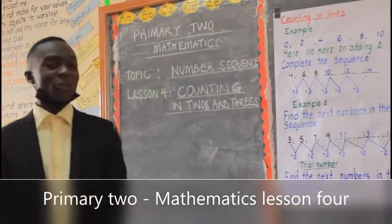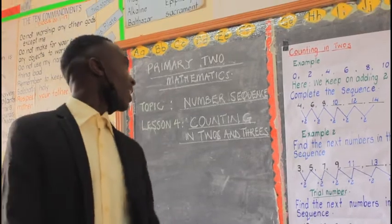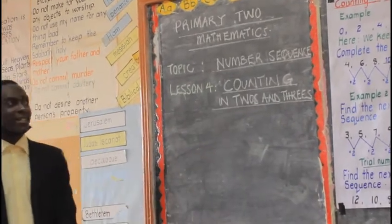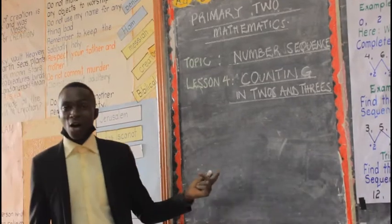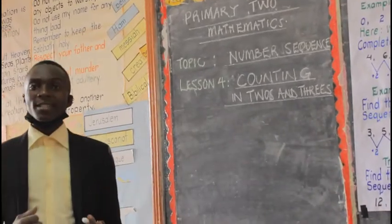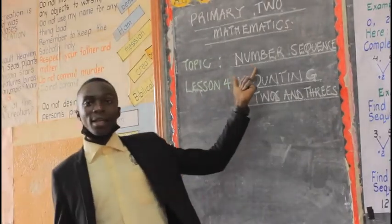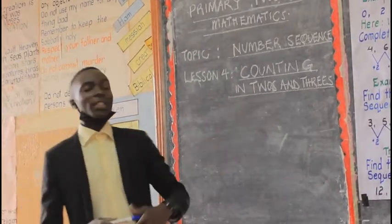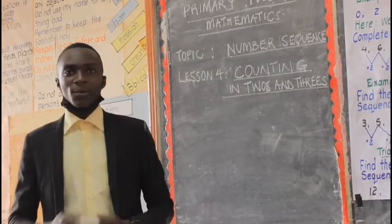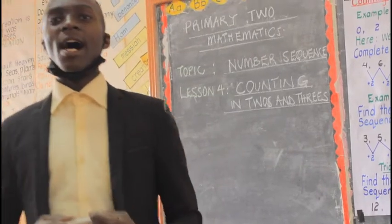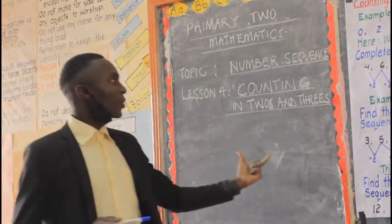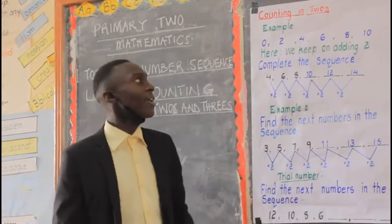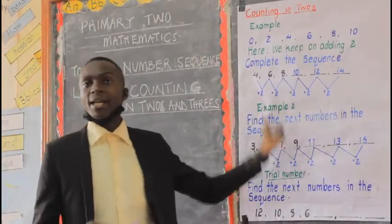My dear children of primary two, we are going to look at another lesson — lesson four of mathematics. The topic now changes. Remember we've been looking at fractions, but now we are on the next topic called number sequences. We are in lesson four, which is counting in twos and threes. Let us look at this chart about counting in twos.